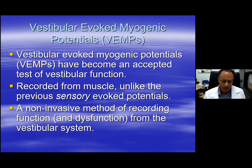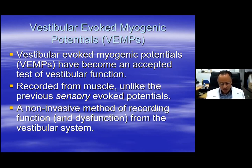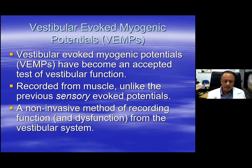This examination has been around from the 1990s and has developed since then. Unlike standard sensory evoked potentials, the vestibular evoked myogenic potential is recorded from tonically contracting or tonically active muscle. But this remains a non-invasive method — everything is done from the skin surface — and this evoked potential is specific to the vestibular system.